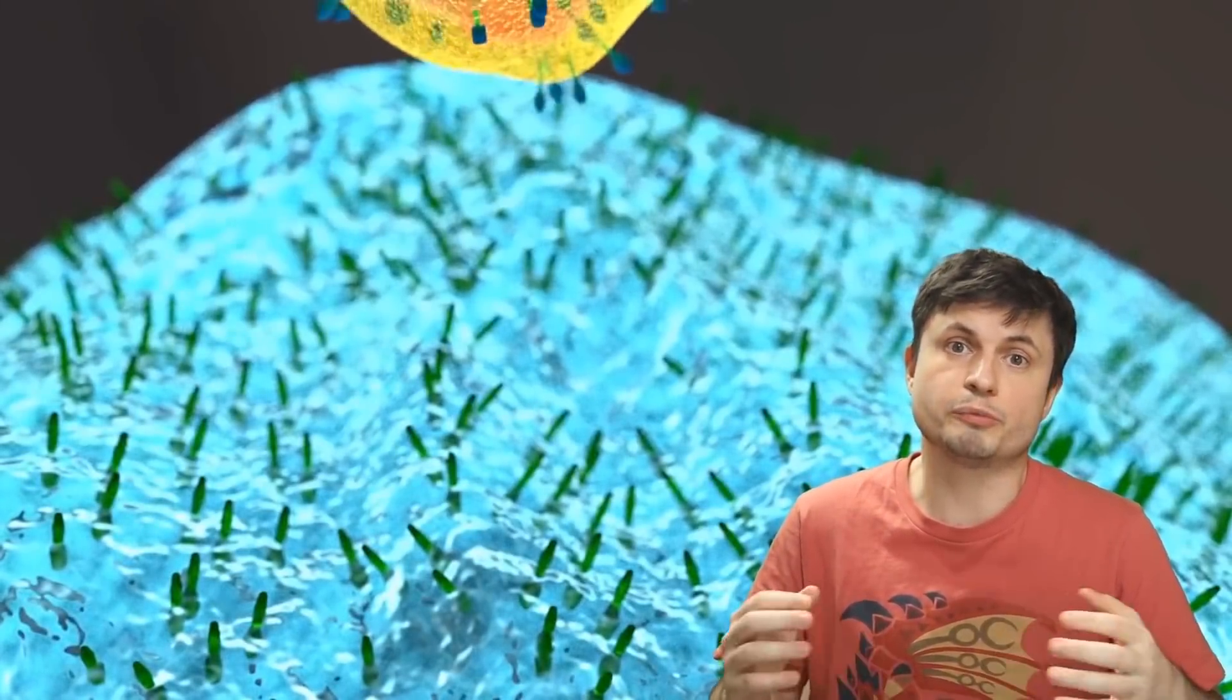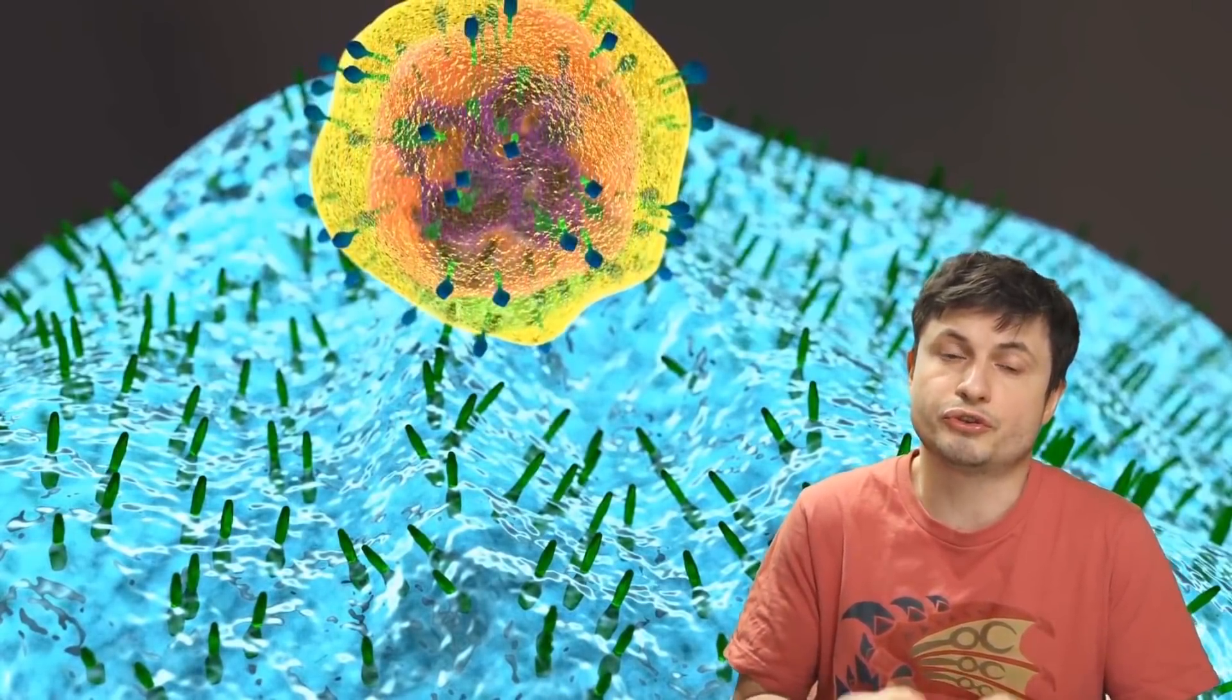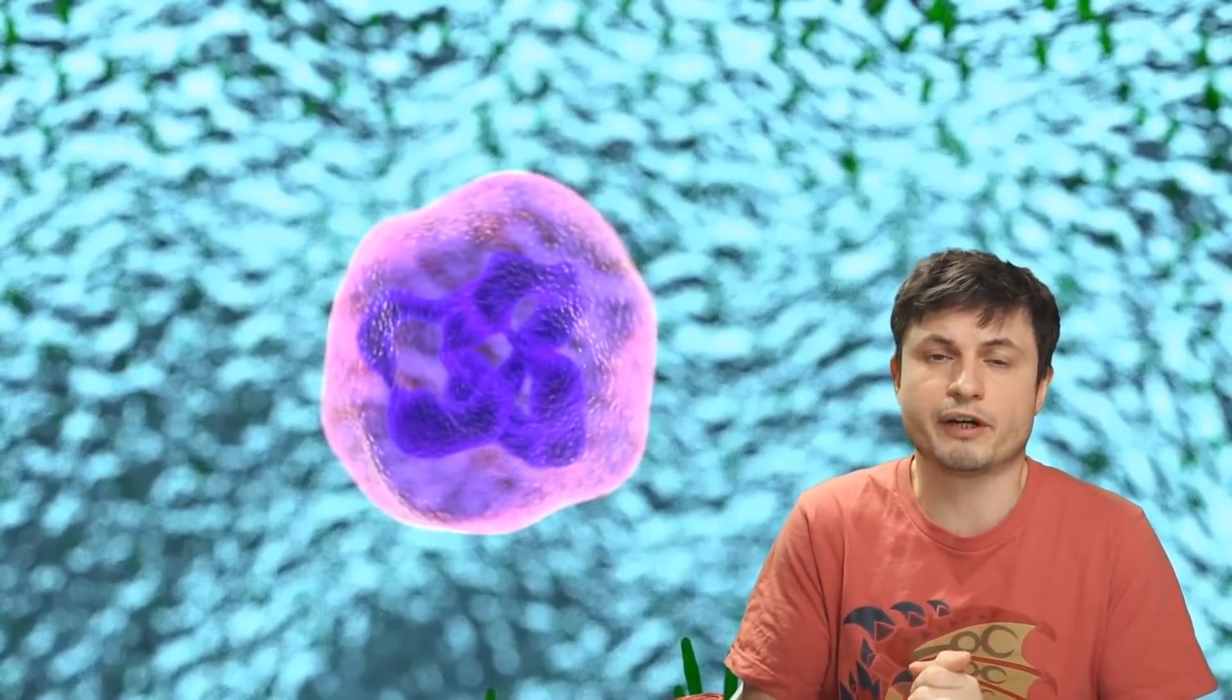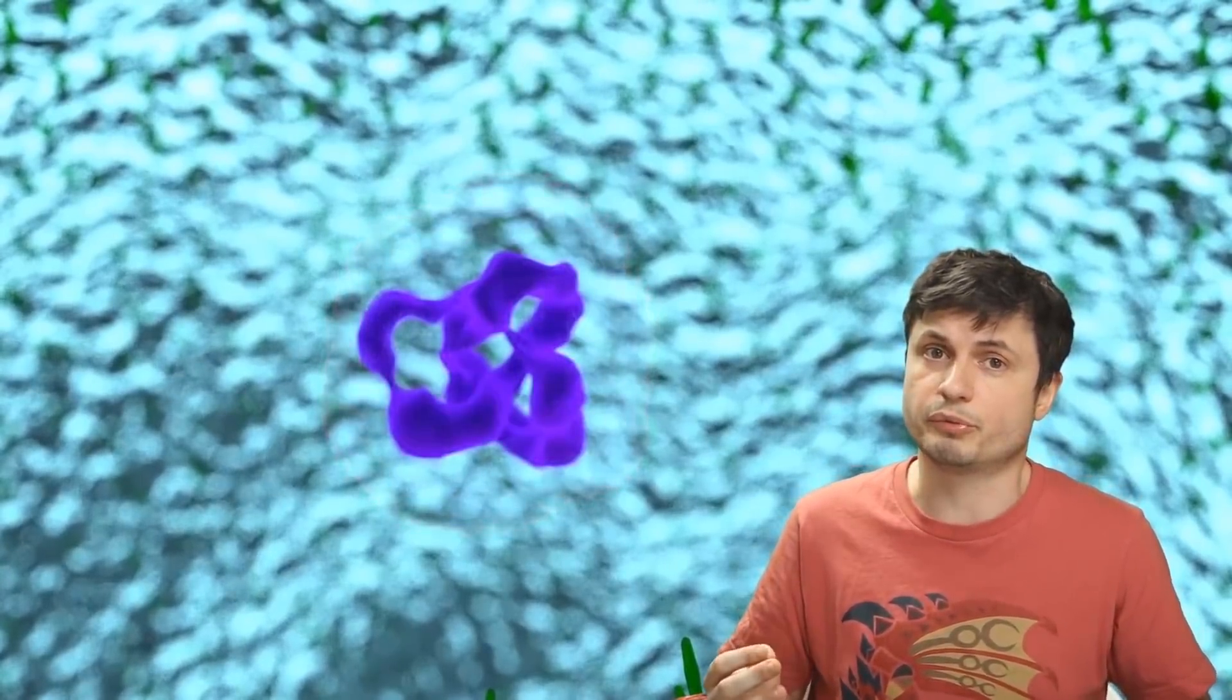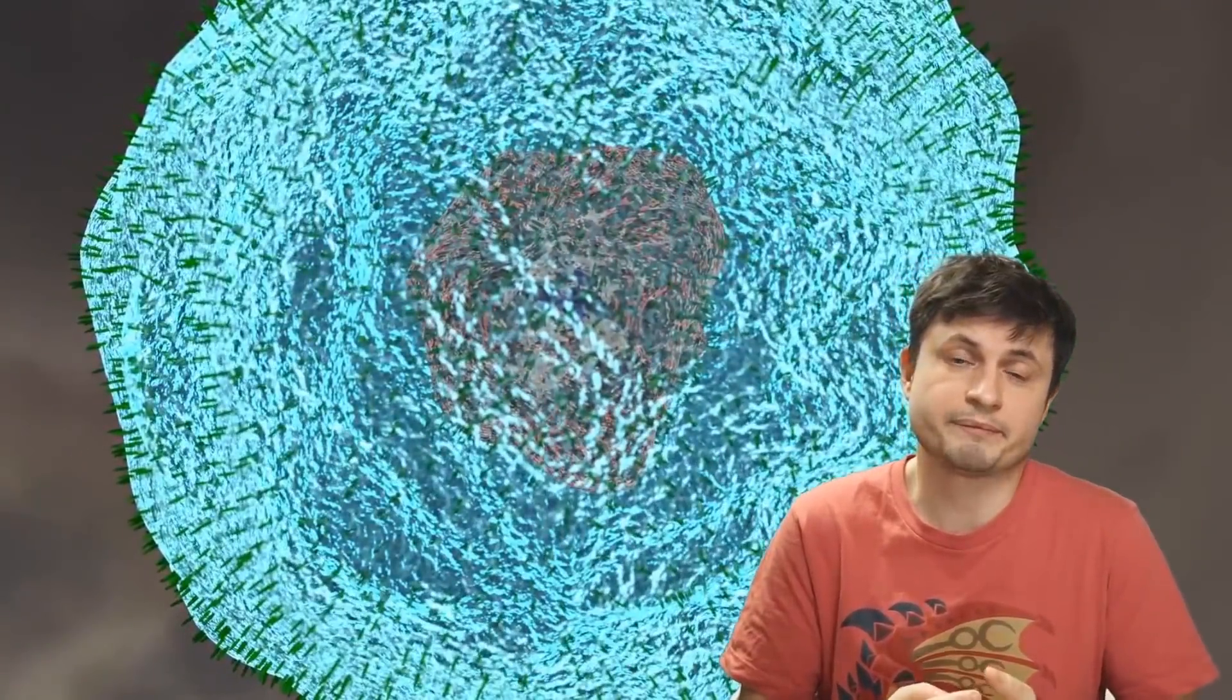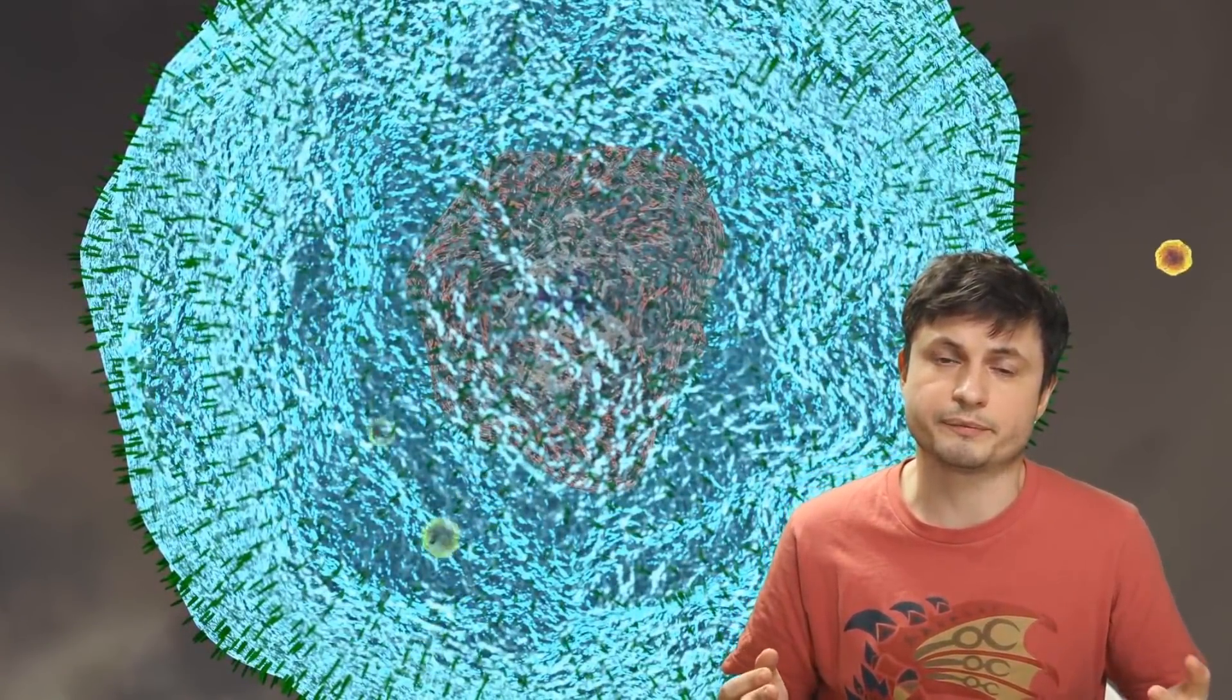But unfortunately, unlike the cosmos around us, unlike the stars and galaxies out there, we actually know so little about the microcosm inside of us. We don't really understand how all of these bacteria and viruses affect us. We don't even know how many there are, or most importantly, what each of them does. And since we've discovered 140,000 different types of viruses already, it means that they all have some sort of an effect that we can't really predict right now.